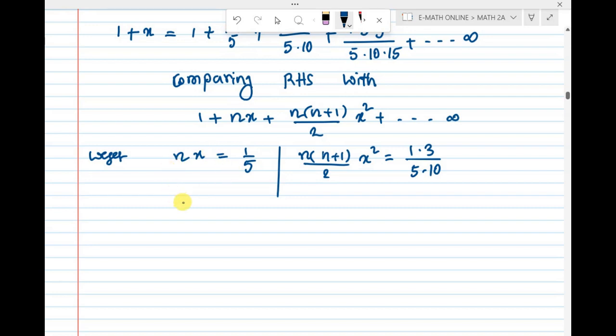So if we divide it, second term n into n plus 1 by 2 into x square whole divided by nx equal to 1 into 3 divided by 5 into 10 whole divided by 1 by 5.